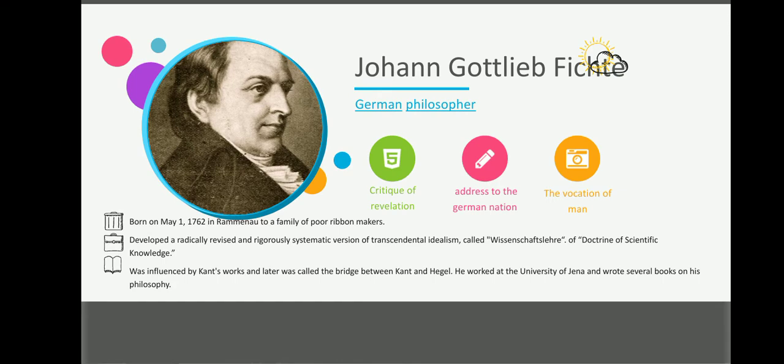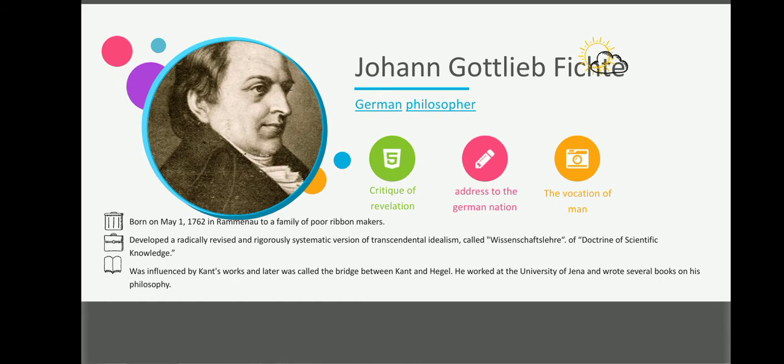Our first philosopher, Johann Gottlieb Fichte, a German philosopher. Fichte was born in 1762 in Romania in Lusatia. He studied theology at universities of Jena and Leipzig and was licensed to preach but never actually held the pastorate. He was early attracted to the study of Spinozism, which was not without its influence on his later philosophy. His acquaintance with Kant's philosophy was the turning point of his life. He developed a radically revised and rigorously systematic version of transcendental idealism called Wissenschaftslehre, or doctrine of scientific knowledge, and was influenced by Kant's works. He was later called the bridge between Kant and Hegel. Major works include Critique of Revelation and Addresses to the German Nation and The Vocation of Man.